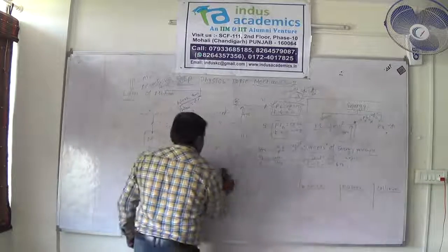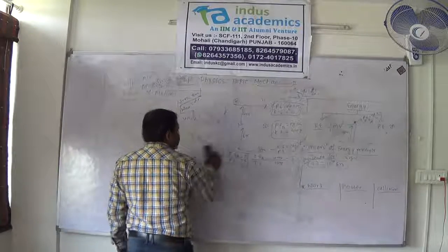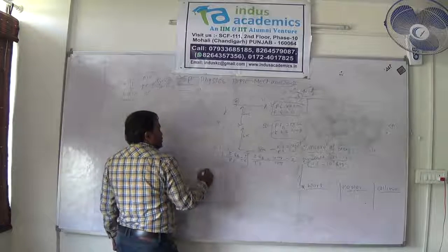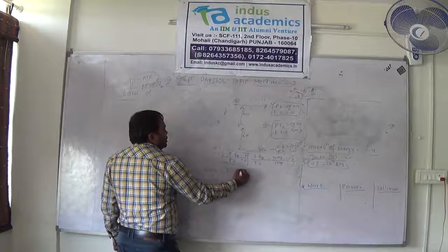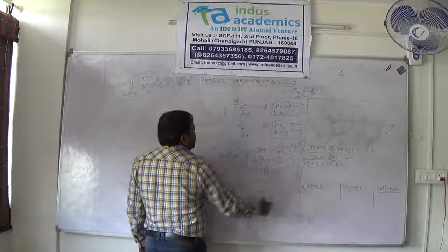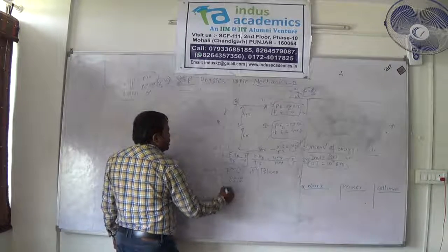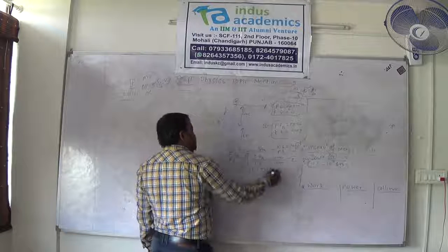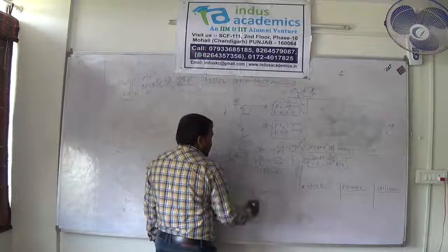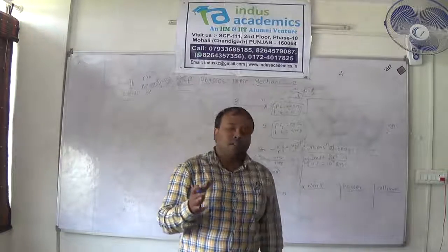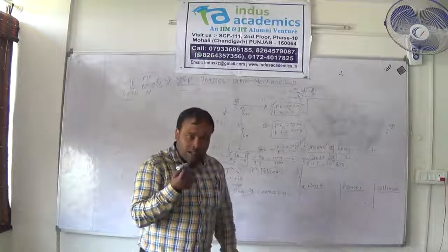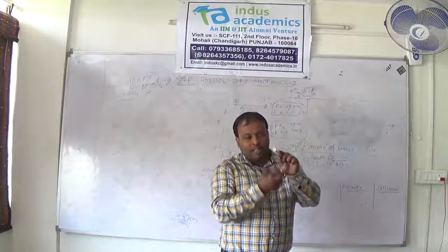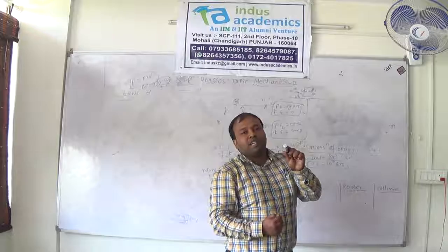Coming to work. Work is a scalar quantity defined as the dot product of force and displacement: W = F × d × cos θ. Work can be positive, negative, or zero. The most common exam question is about zero work — which occurs when cos θ = 0, i.e., θ = 90°. If force acting on a body is perpendicular to displacement, work done is zero. For example, holding a marker and moving horizontally — gravity acts downward (perpendicular to horizontal displacement), so work done by gravity is zero.